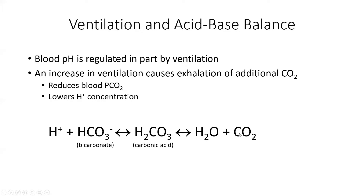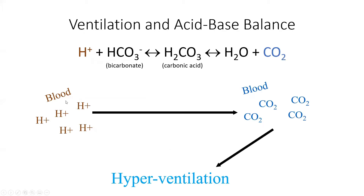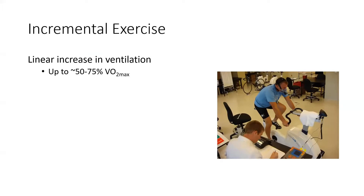Bicarbonate buffering converts blood hydrogen ions into CO2 and water — CO2 is less acidic than free hydrogen ions. We then breathe harder to exhale that CO2. The faster and more CO2 we can eliminate, the harder we can continue to work. Ventilation increases exponentially after about 75% of VO2 max as metabolism becomes more anaerobic, producing more CO2 that must be expelled — this point is called the ventilatory threshold.